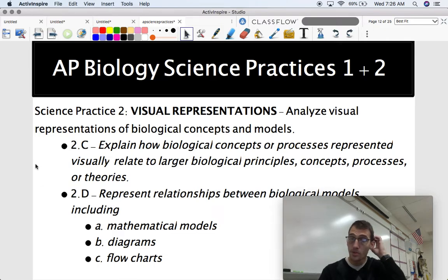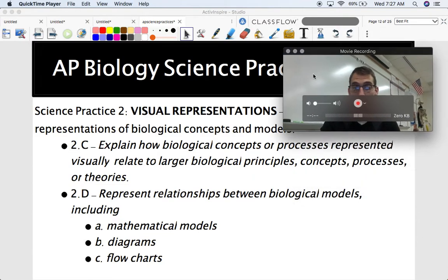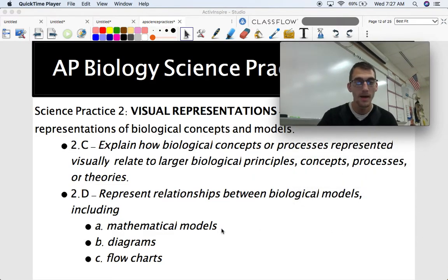The last two portions of Science Practice 2 is 2.C, explain how biological concepts or processes represented visually relate to larger biological principles, concepts, processes, or theories. So how do certain processes relate to bigger concepts in biology? And then 2.D is represent relationships between biological models, including mathematical models, diagrams, and flow charts.